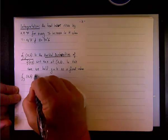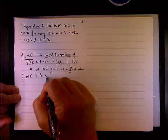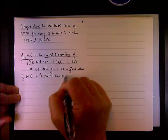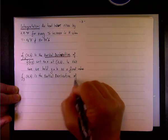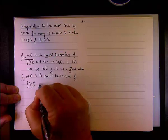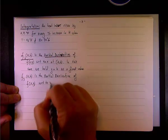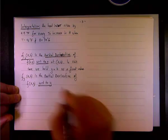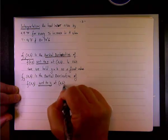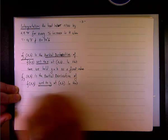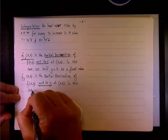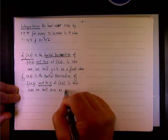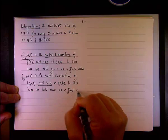And likewise, f_y of a, b is the partial derivative. Well, basically, I'm going to say the same thing, of f of x, y, with respect to y. So, let me underline this expression at a, b, and in this case, we hold x equals a as a fixed value.